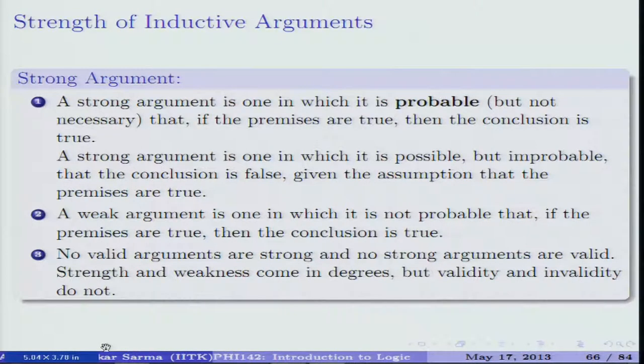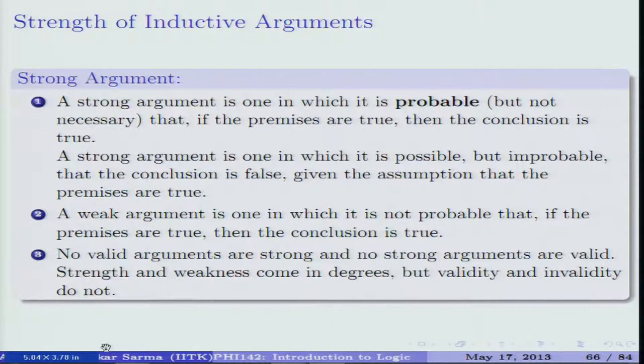In the case of deductive arguments, the conclusion necessarily follows from the premises — there is no single counter-instance showing true premises and a false conclusion. In inductive arguments, the necessity is replaced by probability, because there is no guarantee that if premises are true the conclusion is also necessarily true. No valid arguments are strong, and no strong arguments are valid.